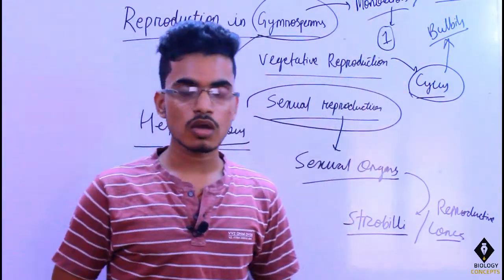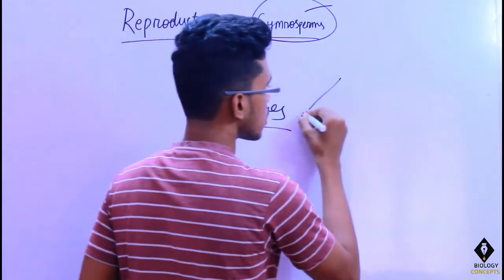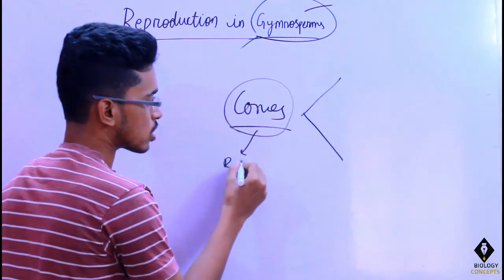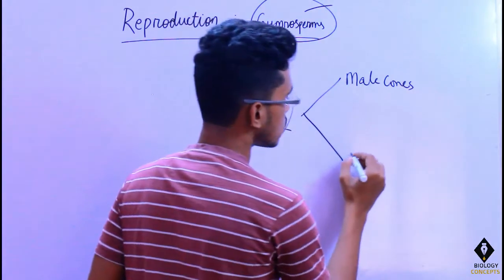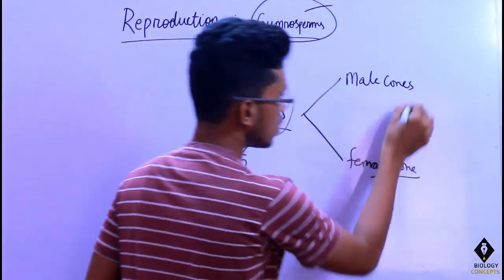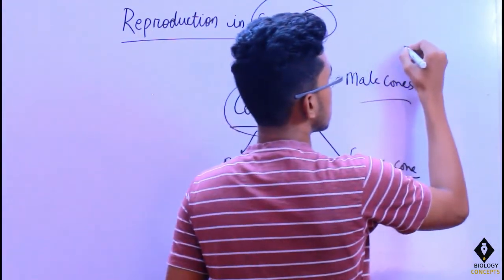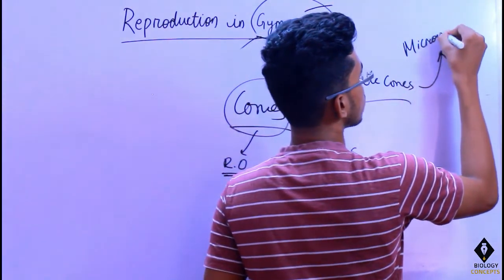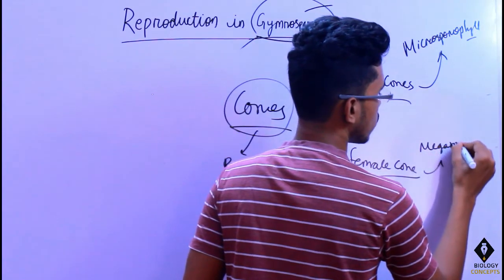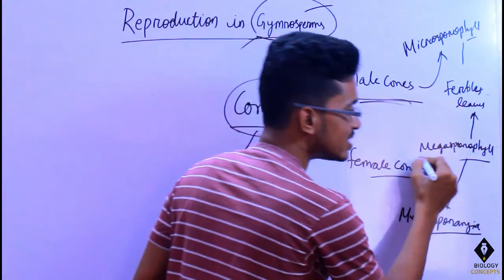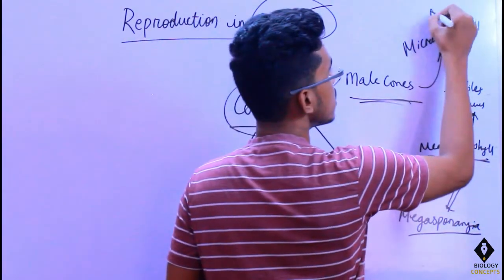Now let us discuss the cones. Make sure you note that cones are the reproductive organs of the gymnosperms. Cones are basically two types: male cone and female cone. Male cones contain microsporophylls, and female cones contain megasporophylls.